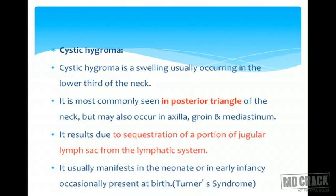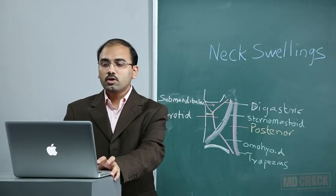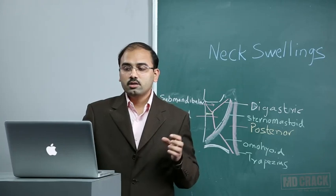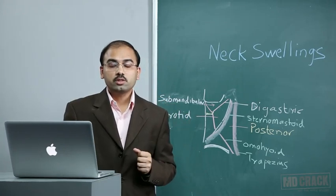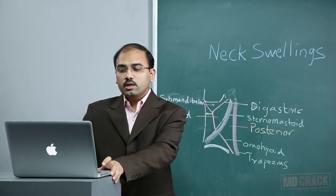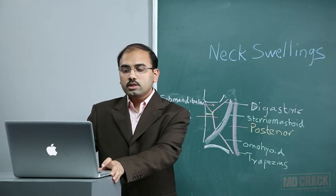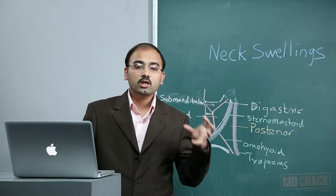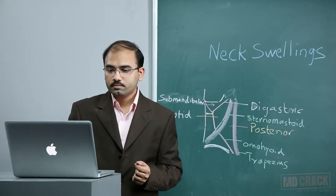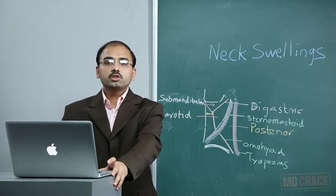These swellings may be congenital, and Turner syndrome is mainly associated with this condition. The swelling is soft and partially compressible, and invariably increases in size when the child coughs or cries. The characteristic feature distinguishing it from other neck swellings is that it is brilliantly translucent. The cysts are filled with clear lymph and lined by endothelium. Mostly they are multiple cysts, but occasionally a single large unilocular cyst can be present. It may show spontaneous regression.